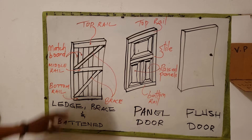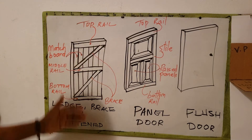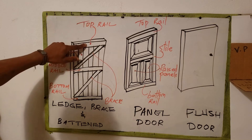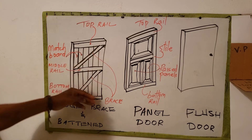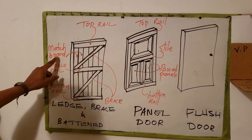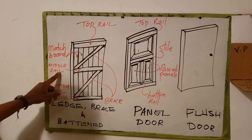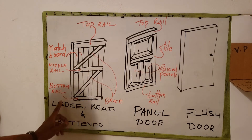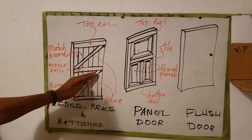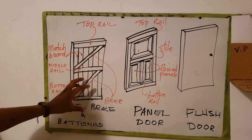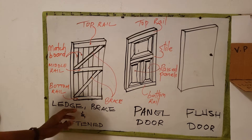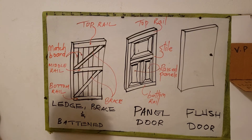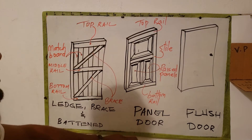In this case we have a ledge door - a ledge, brace and batten door. This part is referred to as the top rail. The vertical pieces of boards that are joined together is called the match board. This is the middle rail, bottom rail. The horizontal piece that supports the match boards is referred to as the brace. Typically a ledge and brace door has at least two braces.